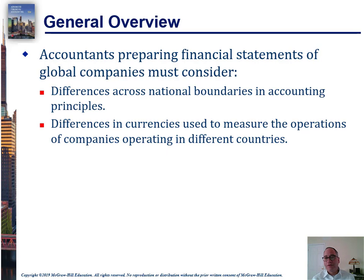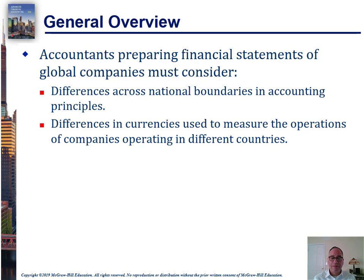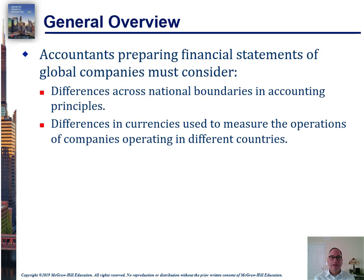Every accountant should have some familiarity with International Financial Reporting Standards — IFRS. If you're going to consolidate financial statements from a subsidiary not based in the United States, you should know what basis of GAAP they're using. If they're not using US GAAP, which may very well be the case, you need to be familiar with the issues and work with that subsidiary to consolidate them. When preparing consolidated financial statements, all subsidiaries must use the same GAAP as the parent — whether that's US GAAP or IFRS.